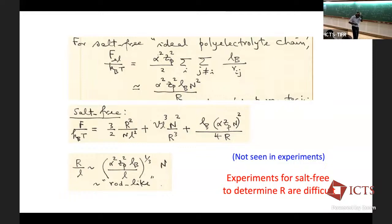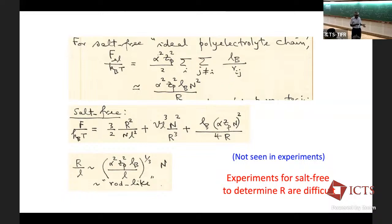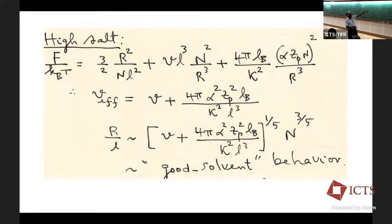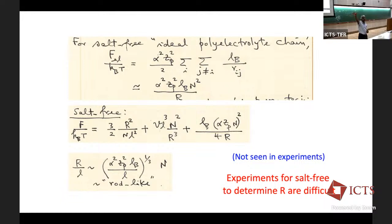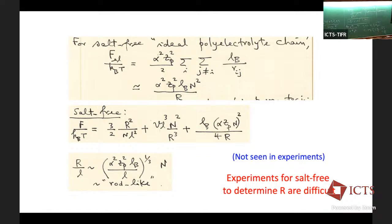In the high salt limit, I have R ~ V_eff^{1/5} N^{3/5}, experimentally validated. In the salt-free limit, R ~ N — rod-like, but experimentally impossible. There's a question: what do you mean by high salt? Is it 10 molar, 0.1 molar? The experiments show that if you have a salt concentration of 0.01 molar, that already falls into the category of high salt. You don't have to go to one or two molar. Practically speaking for these systems, 0.01 molar already pushes us into the high-salt regime.